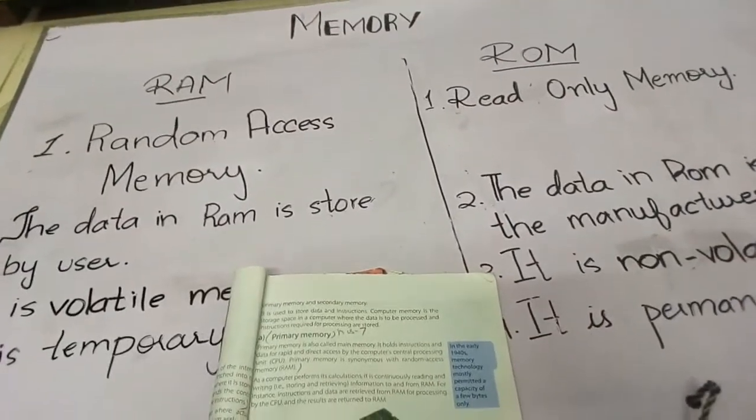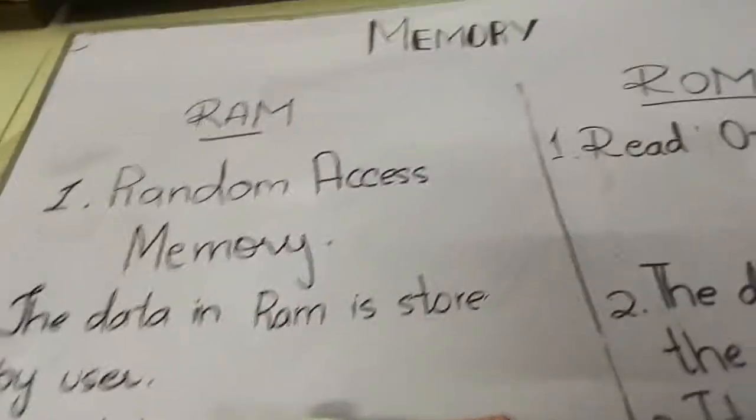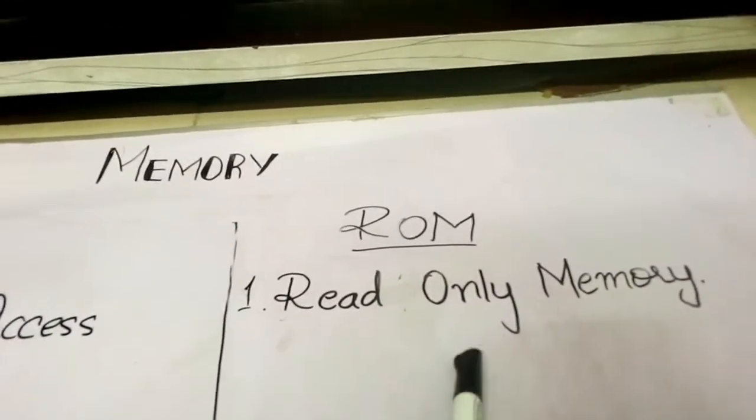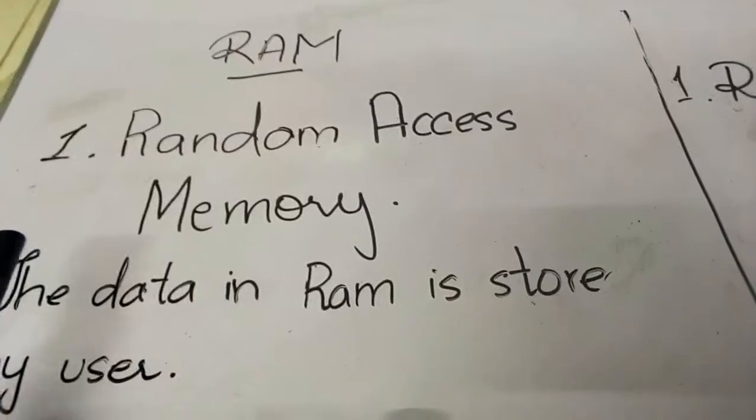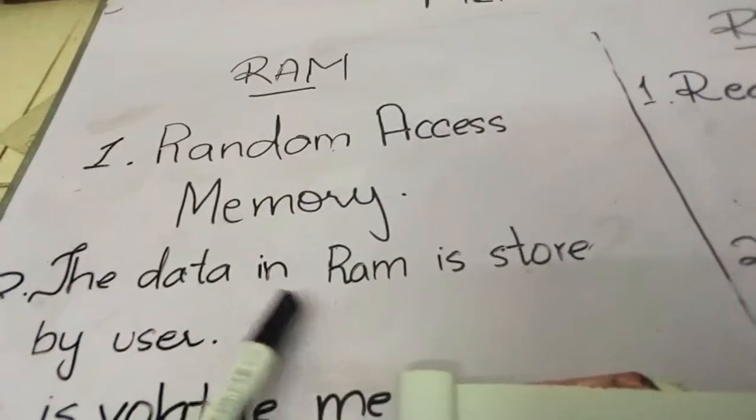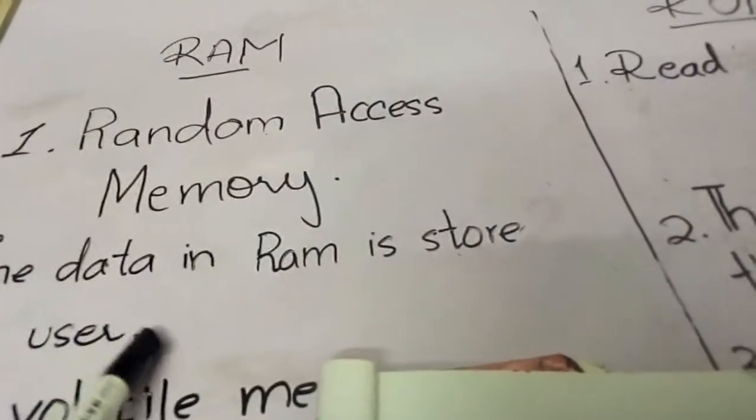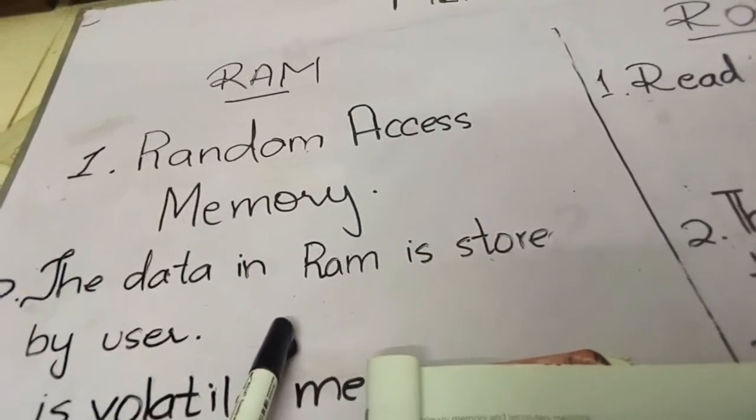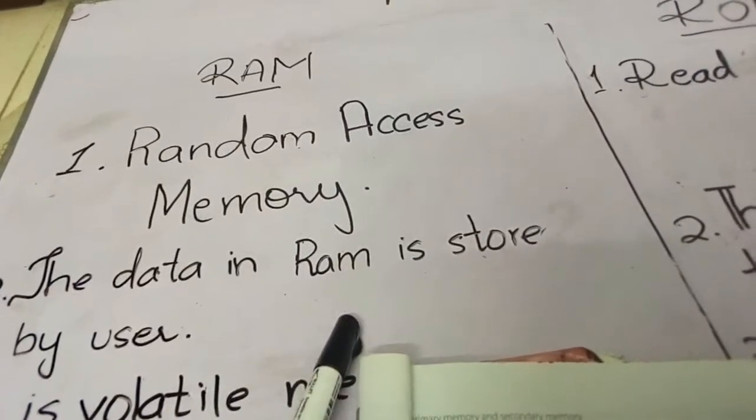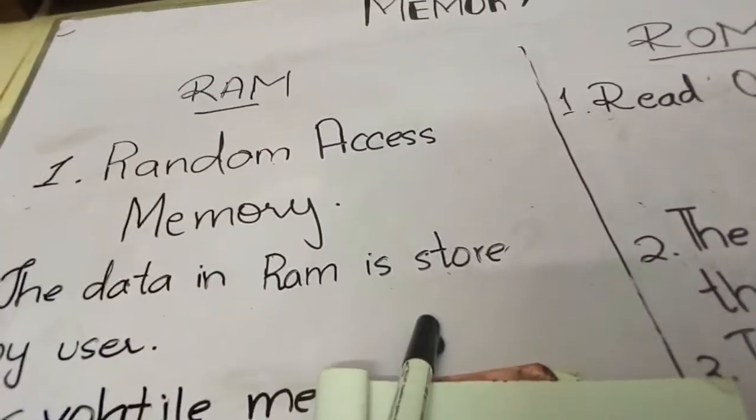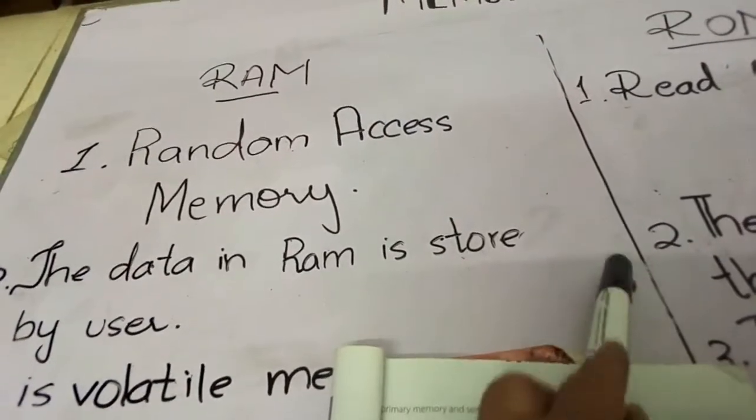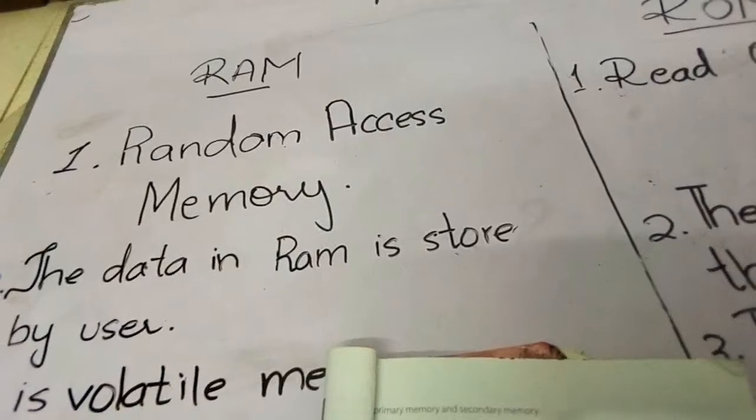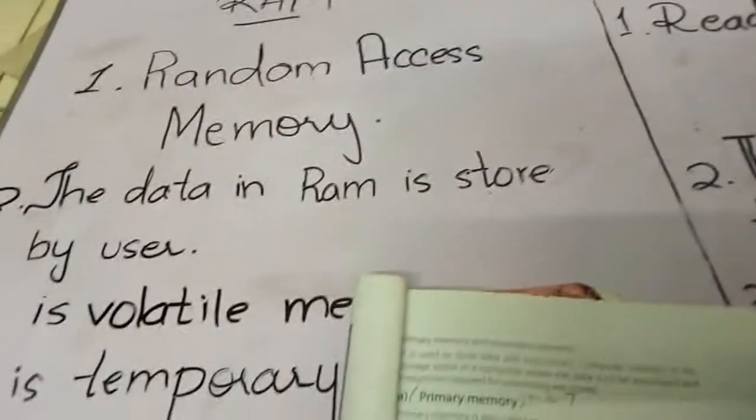Now I'll explain RAM and ROM. RAM stands for random access memory and ROM stands for read only memory. What is RAM? The data in RAM is stored by user. RAM is the user's memory, it's our memory. Whatever work we do in the computer is stored in RAM. After processing, it will go to the desired location. If you want to transfer data to storage devices, it will go to the storage devices. If you want to transfer to output devices, it will go to the output devices.